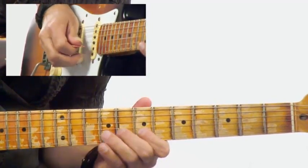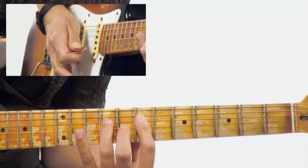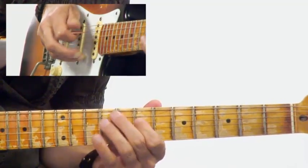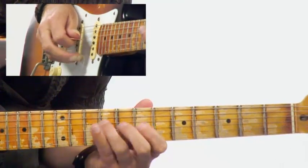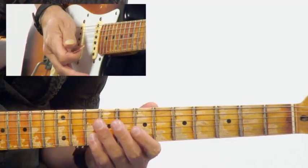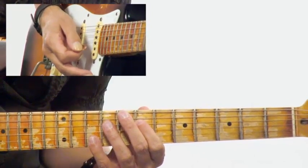Then I'm hammering from the F#, string skipping again, B down to A, B, and ending on the A—an octave above our A here.